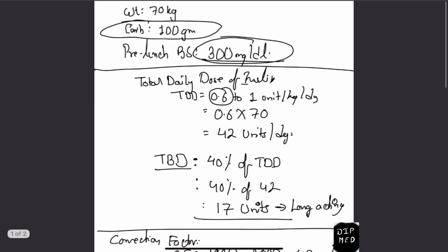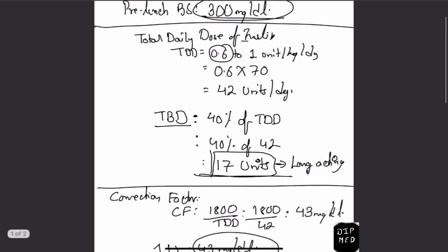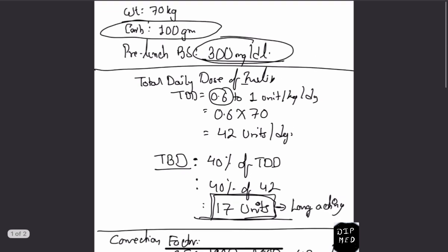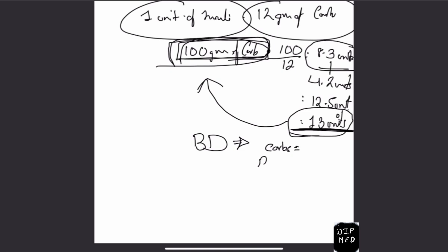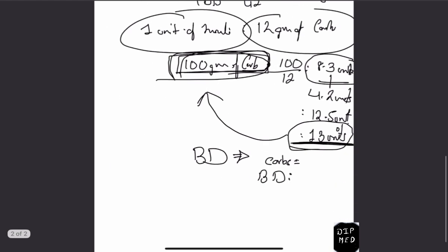In summary, this patient will take 17 units of long-acting insulin at night as the basal dose, and 13 units of rapid-acting insulin before his lunch as the bolus dose. Similarly, we can calculate the dose of insulin required for his dinner by determining the amount of carbohydrate in his dinner and his pre-dinner blood sugar, then applying the same technique. This is how we calculate the insulin dose precisely and in a manner specific to the individual patient.